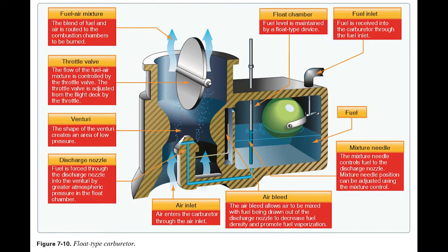Most engines in airplanes have what's called a mixture control, though the Chief doesn't have one. It's just a little valve — in figure 7-10 you can see the mixture needle where the tube goes from the float bowl to the venturi. You can drive that needle down to restrict or shut off fuel flow. The more you shut it off, the less fuel goes in for a given amount of air, giving you what's called a leaner mixture — less fuel for the same amount of air. Open it all the way and you get a richer mixture.